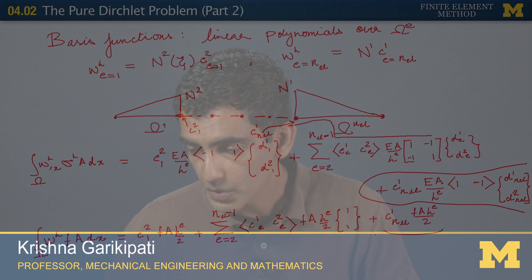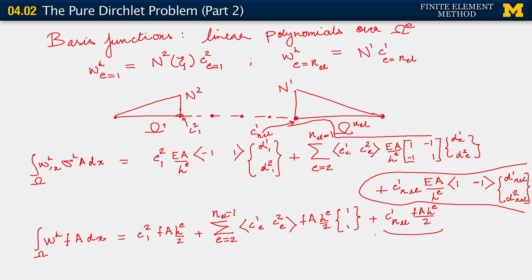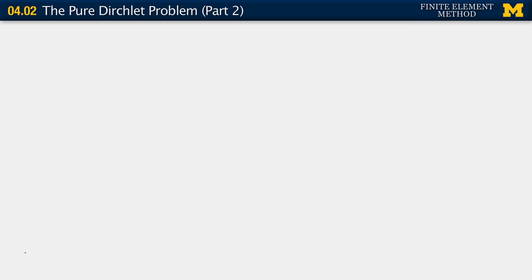So we have this, and now let's look at what the contributions are to our stiffness matrix and our force vector. What I'm going to do now is to simply carry out the process of assembly of these two equations — the last two equations on this slide — recognizing that we have this map between local and global degrees of freedom. So what we do is we carry out now the process of finite element assembly.